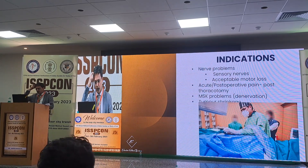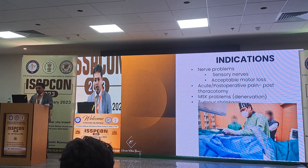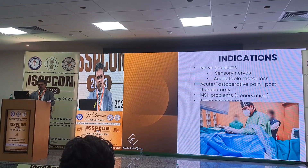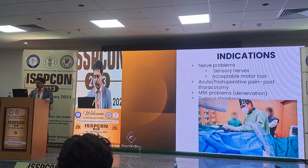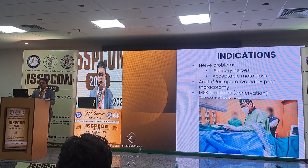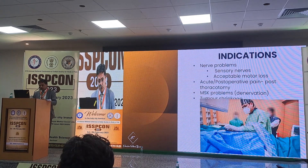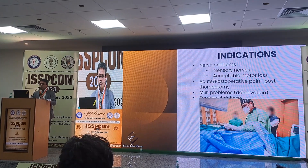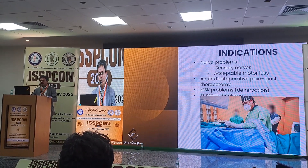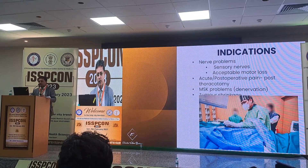So the indications: nerve problems — sensory nerves or where motor loss is acceptable — acute pain, MSK pain, mixed pain, cancer pain. We've covered all of these in the examples. In some scenarios you may also offer RF, like in the shoulder pain case, but cryo has obvious advantages in situations where immediate relief is needed, and that's what makes it different.